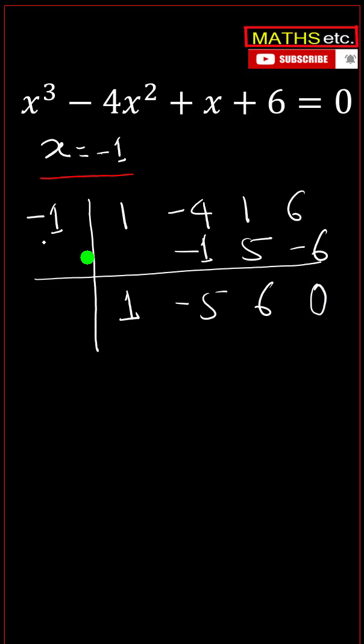We got this remainder as 0 because minus 1 is a root of the equation. Now out of these coefficients we have the equation x square minus 5x plus 6 equals to 0, which is a quadratic equation.